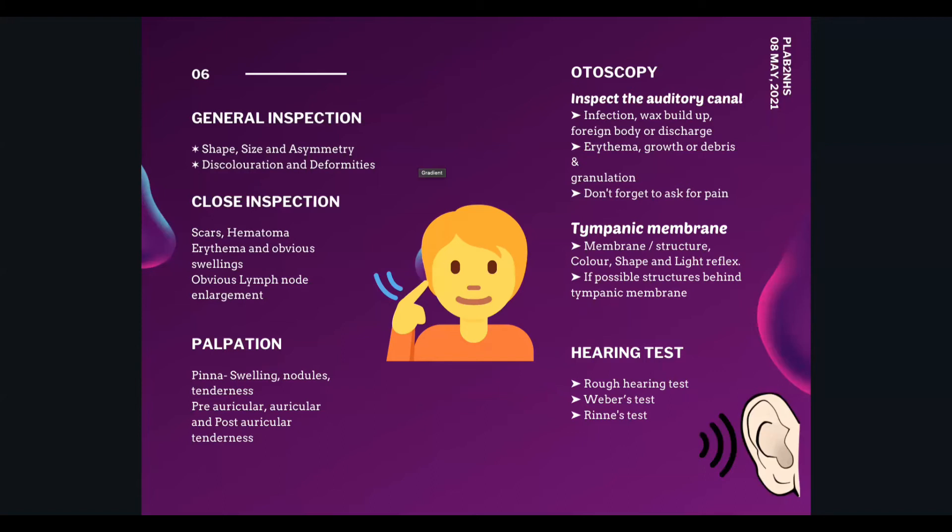To summarize tympanic membrane color: pearly gray is normal; blue indicates fluid in the middle ear; white may indicate tympanosclerosis.